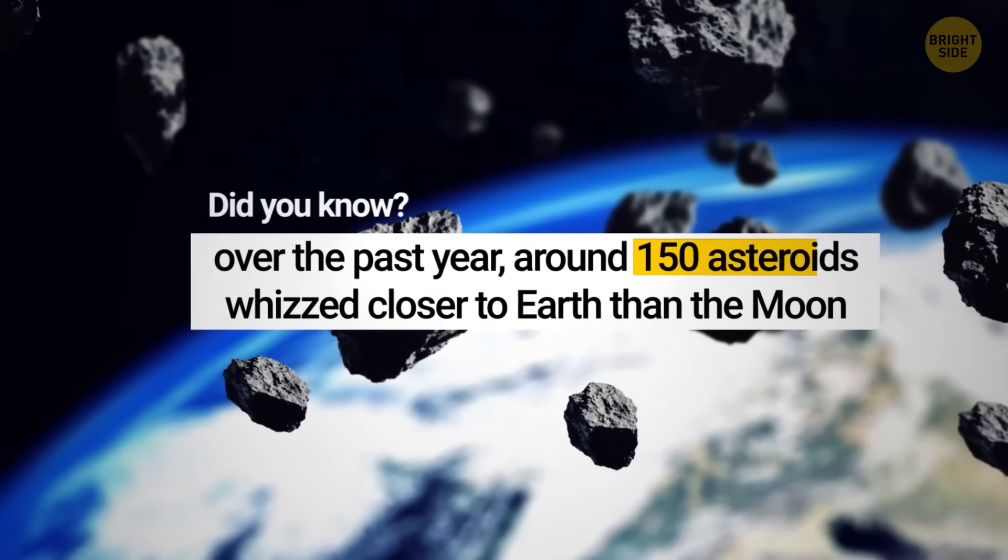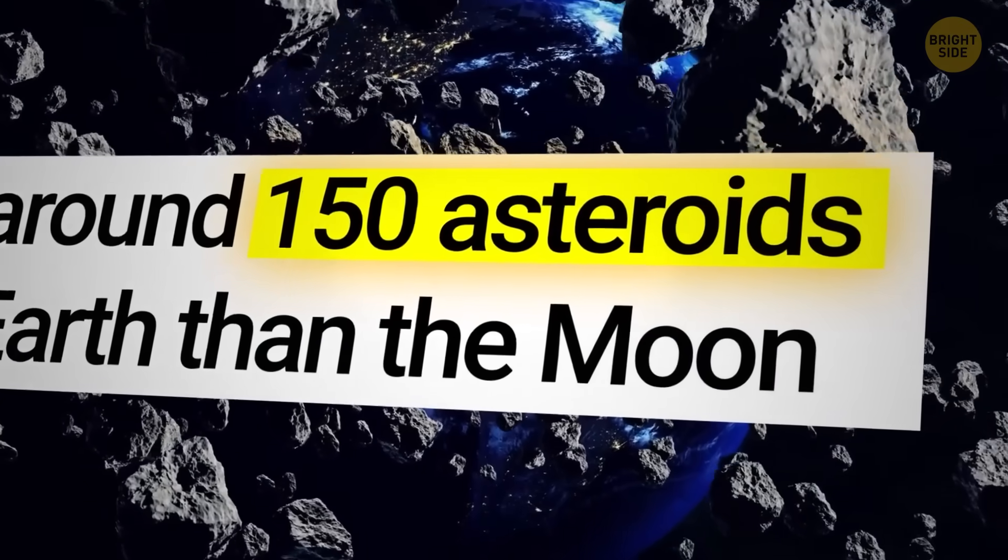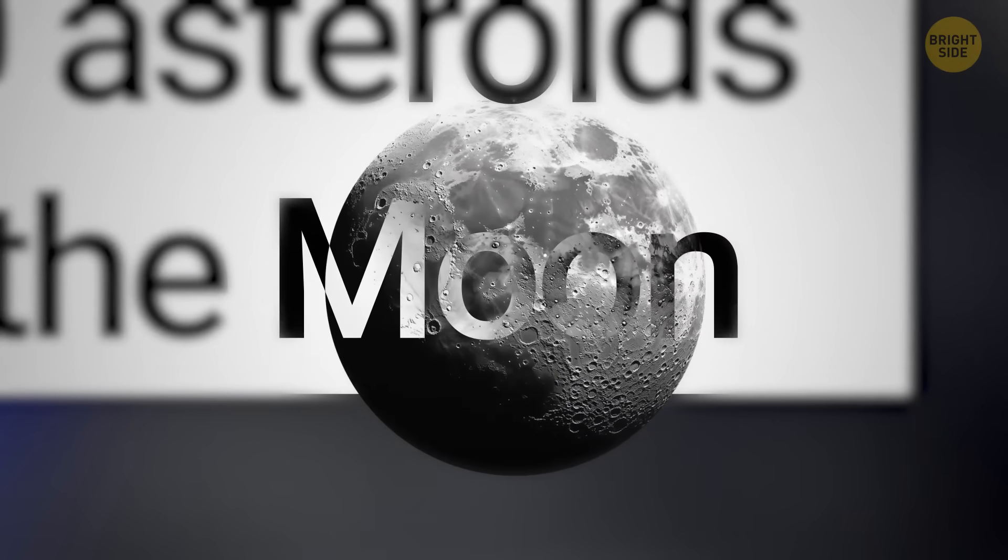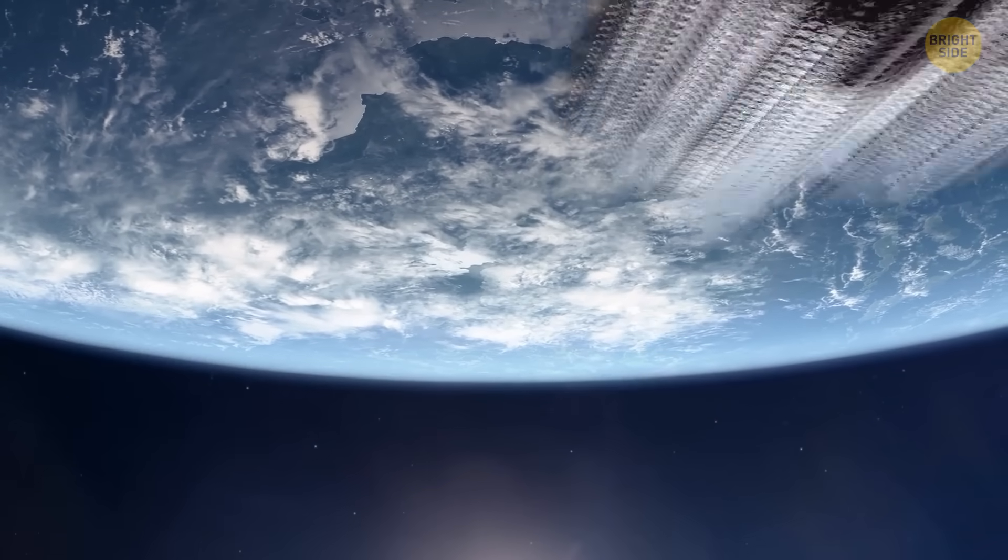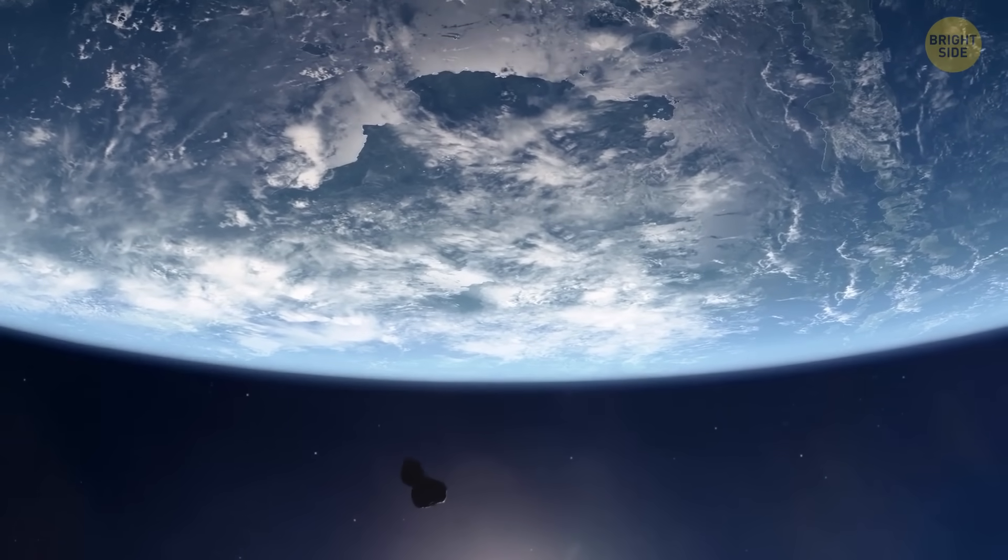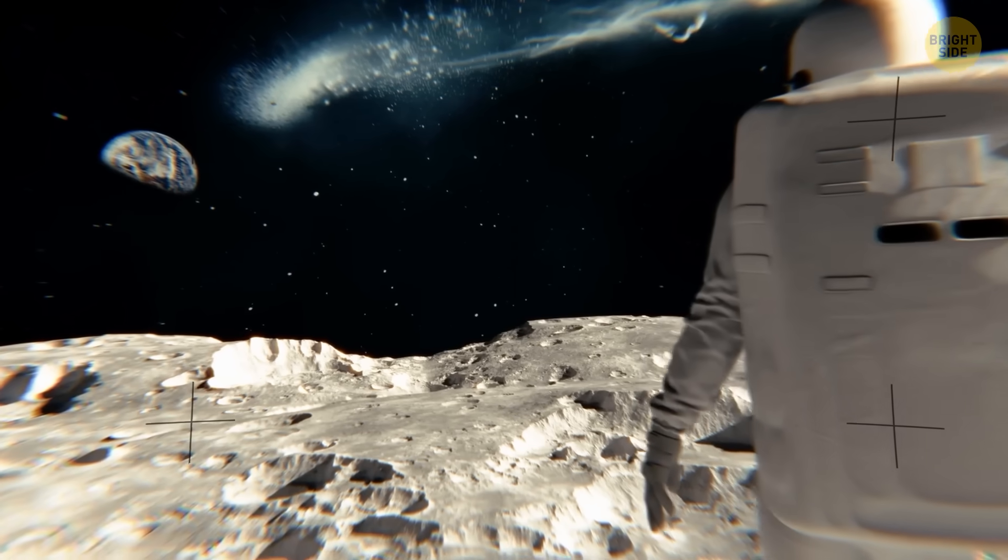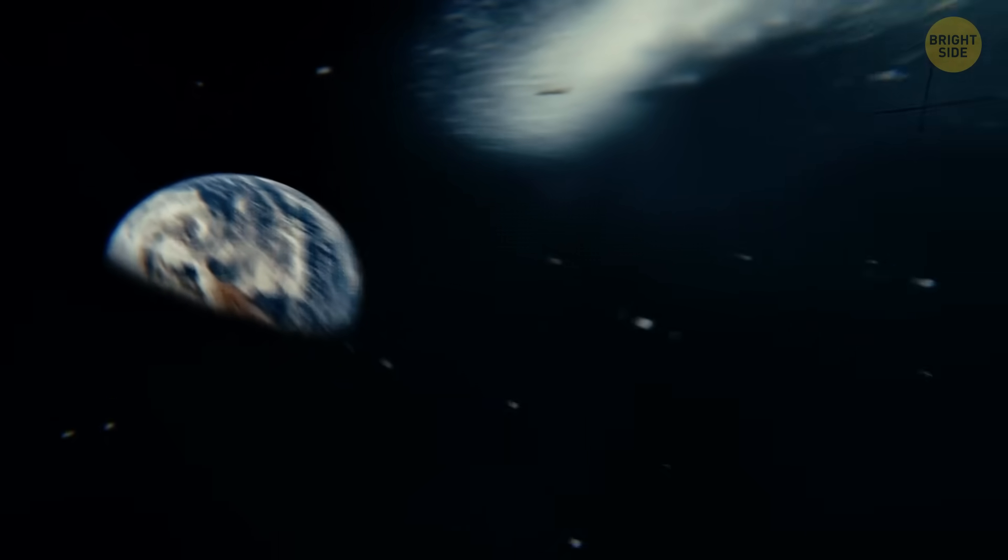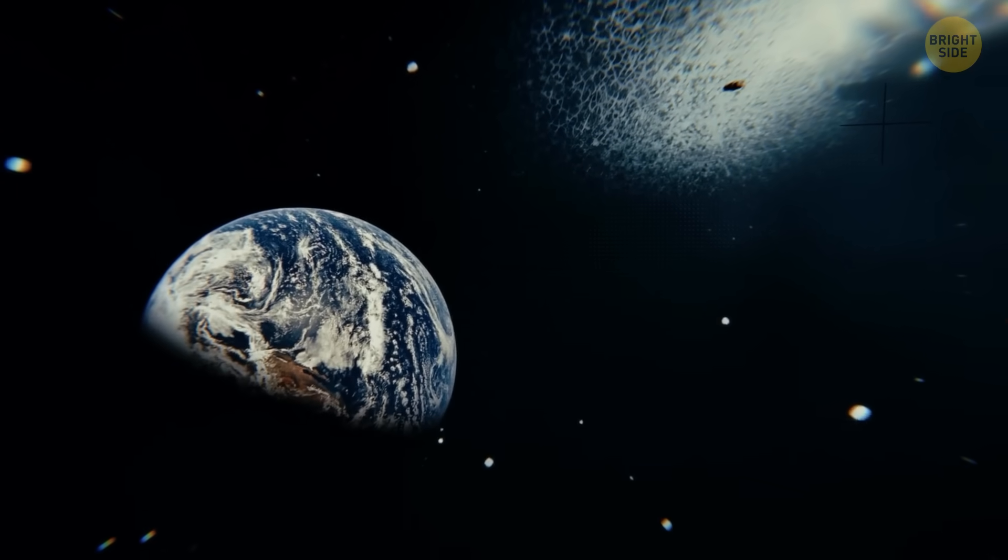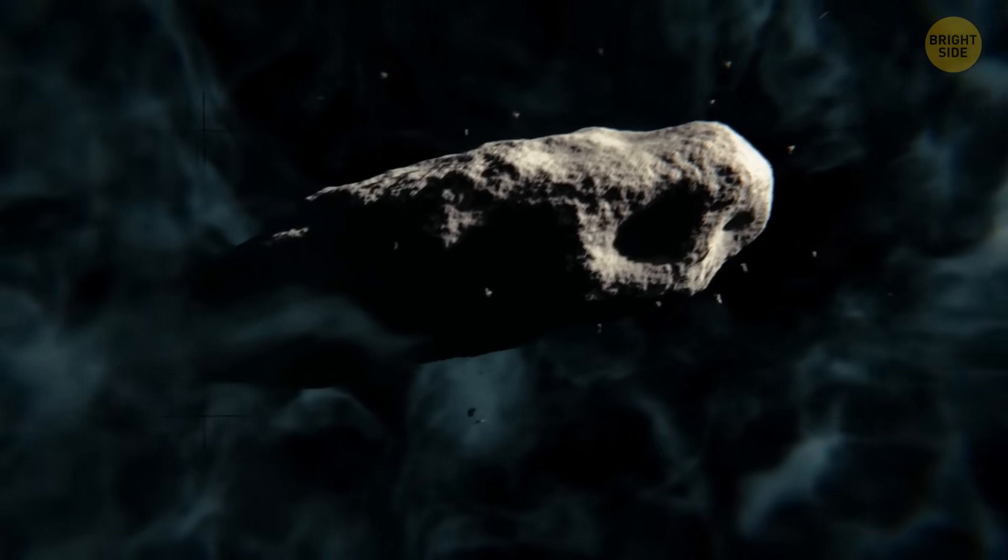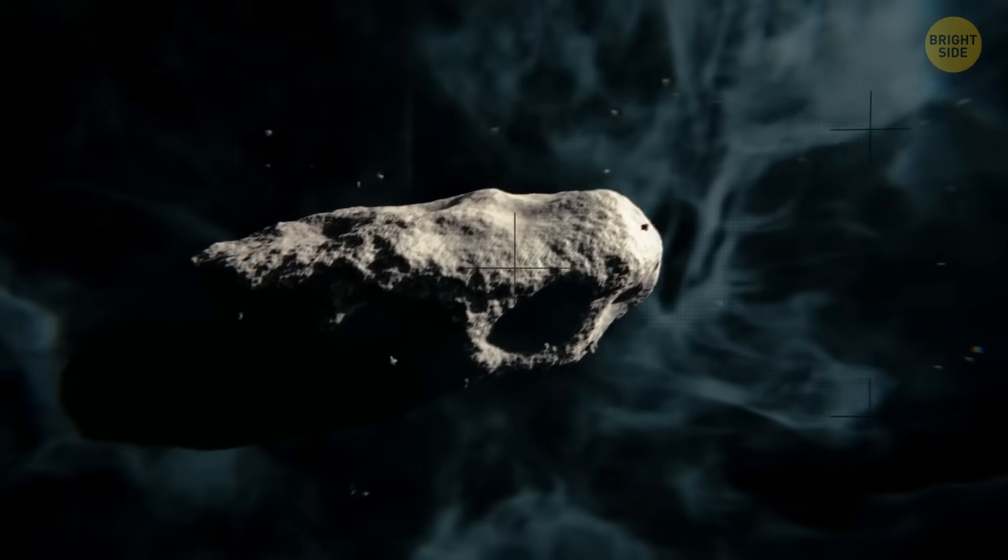Did you know that over the past year around 150 asteroids whizzed closer to Earth than the Moon? But that's not the scary part. It's that some were only noticed after they flew by, and if even one of those had taken a slightly different path, whole cities would be gone. That's what keeps scientists worried - the invisible stuff hiding where our telescopes can't see. Let's explore what that means.